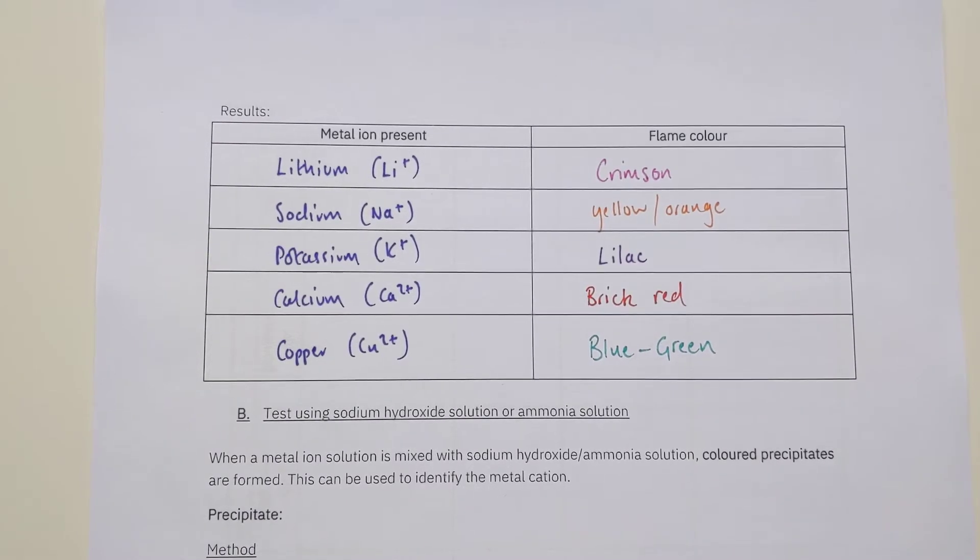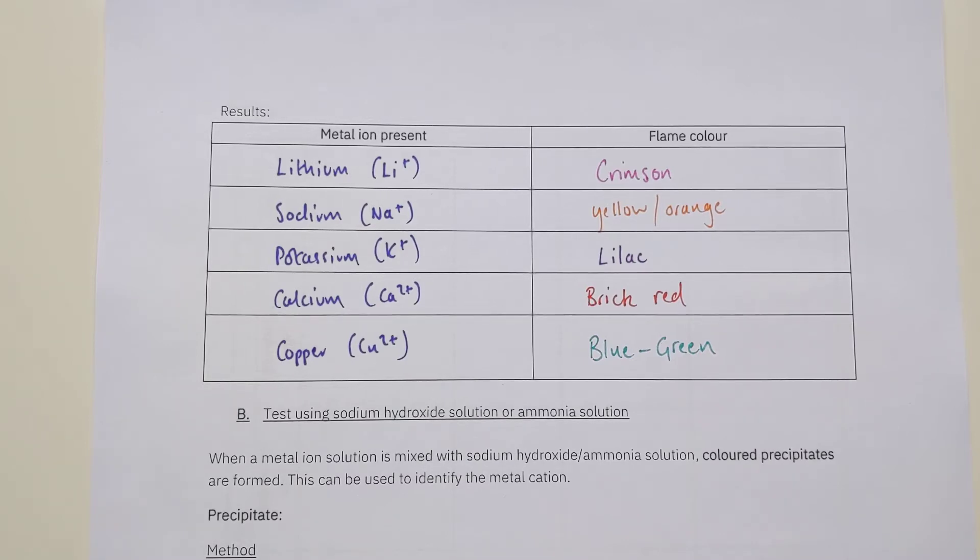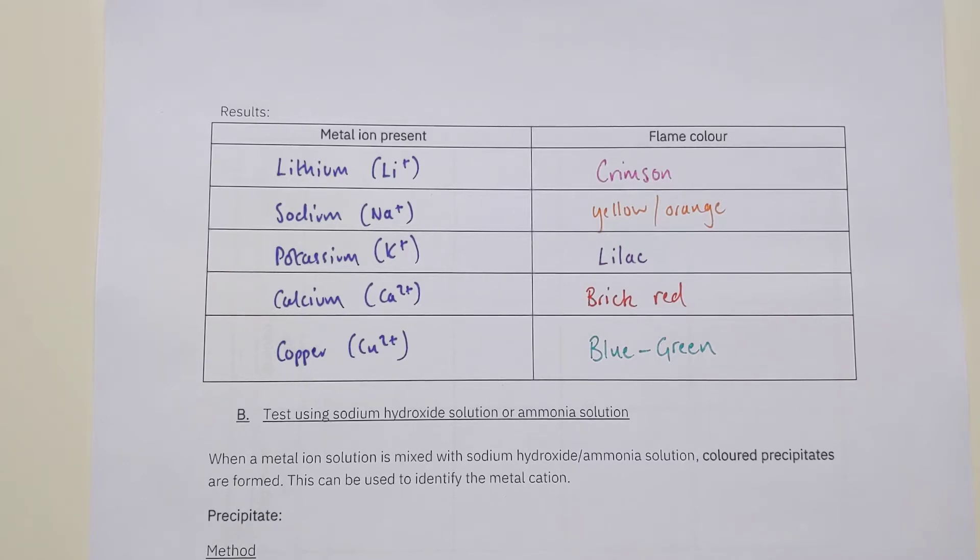We've looked at the first way you could work out an unknown cation in compounds, an unknown metal. That's the flame test, which gives you a distinctive color for each different metal you might find. Now there was one drawback to this method. Unfortunately, we don't have a flame color for each individual metal. Some of them have the same color, some don't have any color at all, so it's not going to be a one-size-fits-all test that works for every single ion.